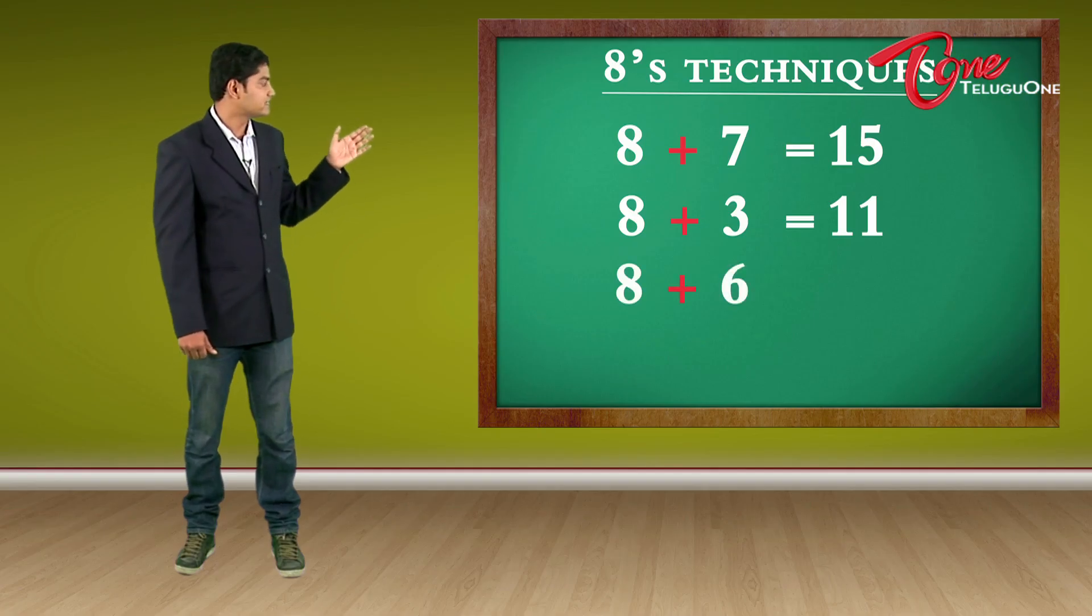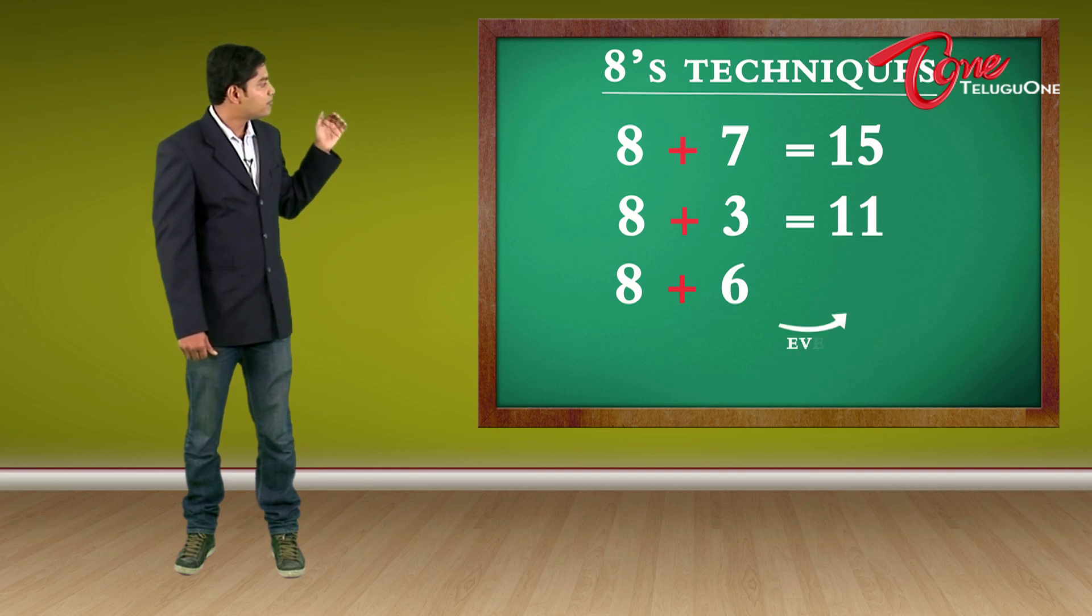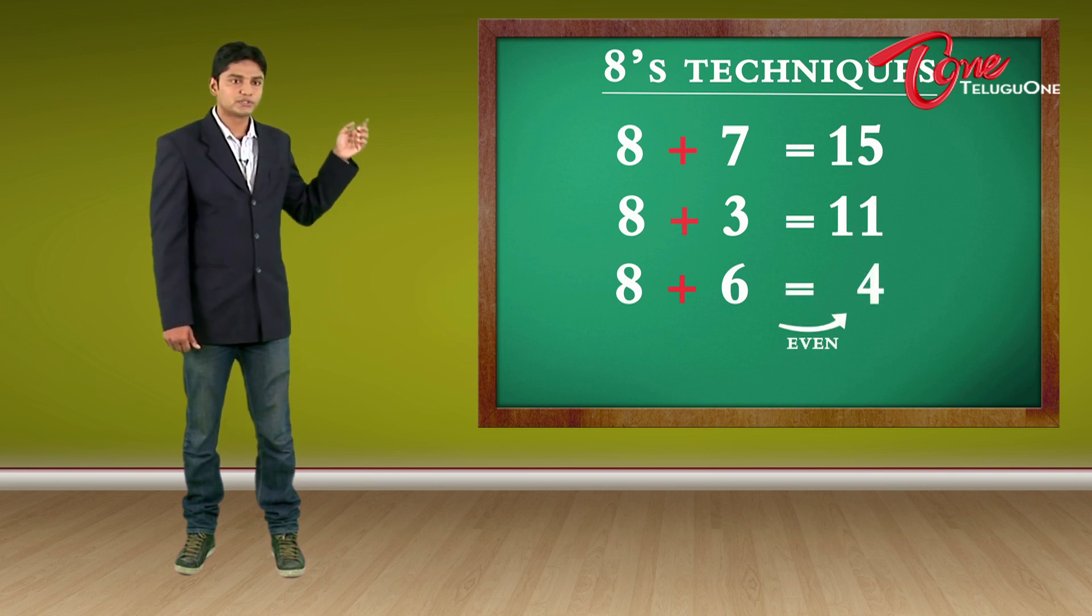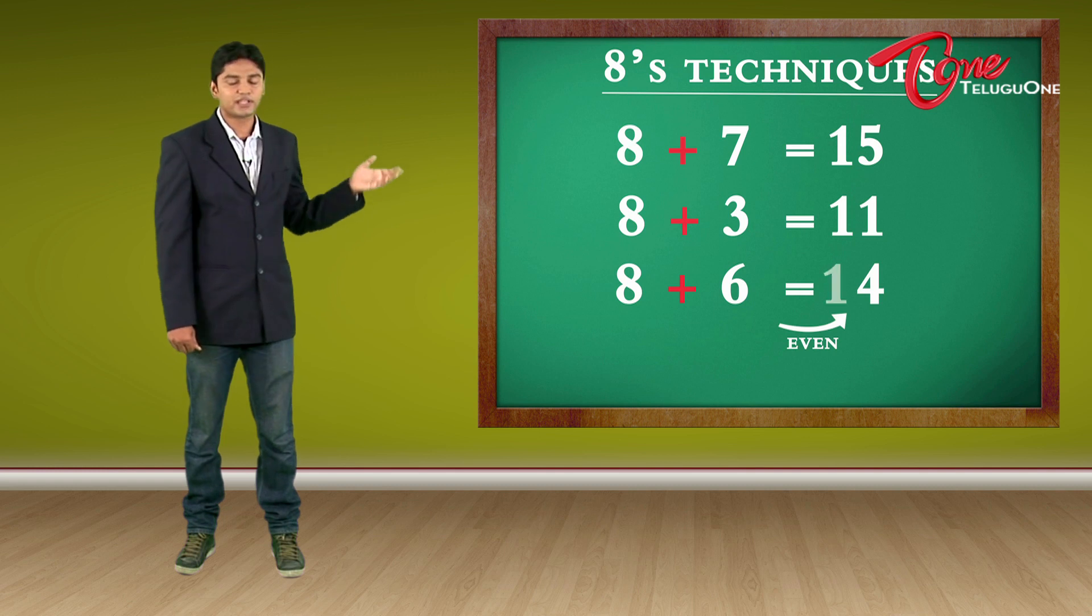Let us take an even number now. 8 plus 6. 6 is an even number. And the even number before 6 is 4. So 8 plus 6 is 14.